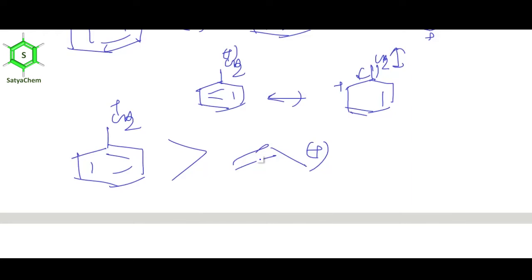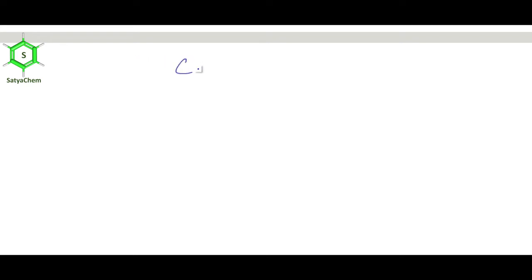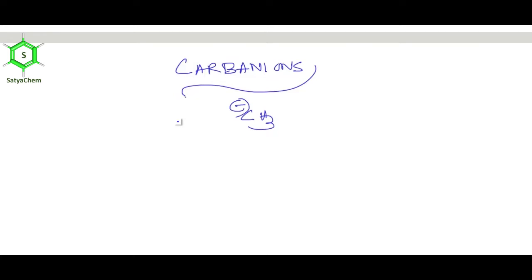Now I am going to discuss carbanion, another reaction intermediate. A carbanion is an anion where a trivalent carbon bears a formal negative charge. The simplest carbanion is CH3 minus. How is a carbanion formed? In the formation of a carbanion, suppose a hydrogen is acidic — acidic hydrogen means this hydrogen bears more positive charge than its usual level.